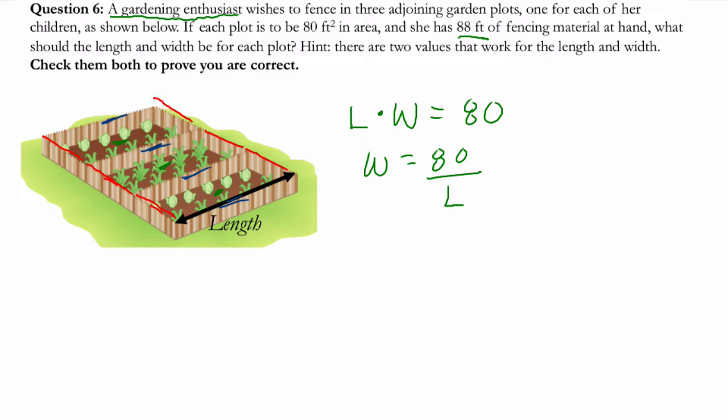So that tells me that whatever the length of each plot is, we have 4 of them. And then whatever the width is, we have 6 of them. Now width is 80 over L. And 6 times 80 over L has to equal, plus 4 lengths has to equal the total perimeter, which is 88. So we're solving this equation right here.